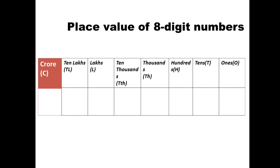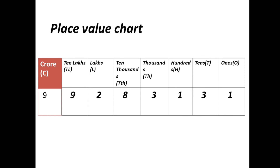Let us understand how to write it in a place value chart. Here is the number 9,92,83,131. The value of 1 is ones, value of 3 is tens, value of 1 is hundreds, value of 3 is thousands, value of 8 is ten thousands, value of 2 is lakhs, value of 9 is ten lakhs, and the last digit 9 comes under the crores place value.